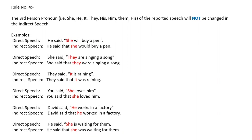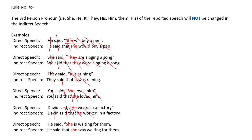Rule number four: third person pronouns — he, she, it, they, him — there is no change at all. Examples: 'He said that she would buy a pen.' 'She said that they were singing a song.' 'They said that it was raining.' 'You said that she loved him.' 'David said that he worked in a factory.' 'He said that she was waiting for them.'